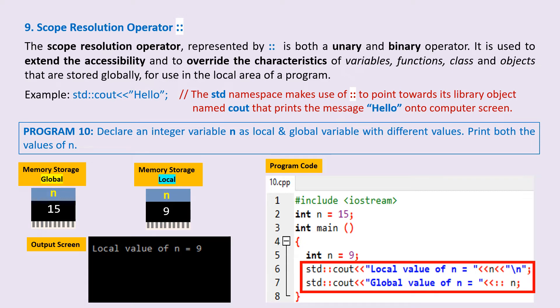Next, we cout the value of global variable n using the scope resolution operator to print the value of global variable n. This scope resolution operator overrides the value of local variable n which is 9, and instead considers the value stored in global variable n which is 15. So we now have the output: global value of n equals 15.